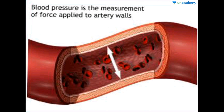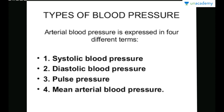Now we will discuss blood pressure. Blood pressure is the measurement of force applied to the artery walls by the flowing blood. As the blood flows, it applies some pressure over the walls of the artery, and that particular pressure is recorded as blood pressure. The types of blood pressure encountered in our body are mainly systolic blood pressure, diastolic blood pressure, pulse pressure, and mean arterial blood pressure. Systolic blood pressure is the blood pressure recorded when the heart is in systole — when the ventricles contract and push blood into the arteries.